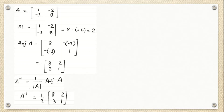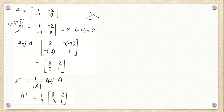We are going to consider a 2×2 matrix as our first question. Step number one is to find the determinant of the matrix. The determinant of a 2×2 matrix is found by multiplying along the principal diagonal and subtracting the product of the secondary diagonal. So that is 1×8 minus (−3×−2), which gives 8 − 6 = 2. So the determinant of A is 2.